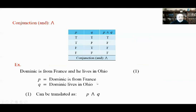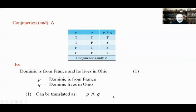Here is the conjunction — the AND operator. We use the wedge symbol for it. The AND operator is true only when both propositions are true; otherwise the result is false. For example: 'Dominic is from France and he lives in Ohio.' We set P as 'Dominic is from France' and Q as 'Dominic lives in Ohio.' This proposition translates as P AND Q.